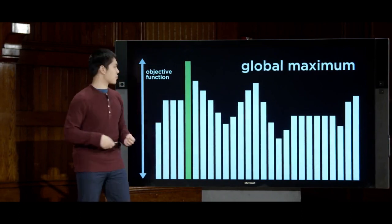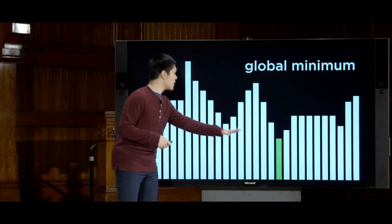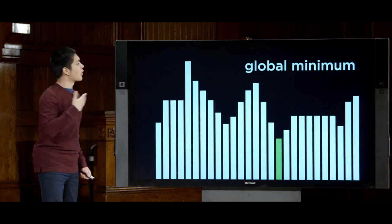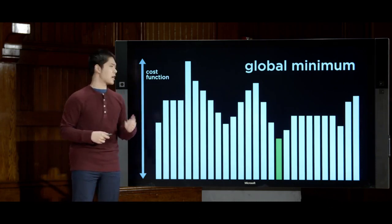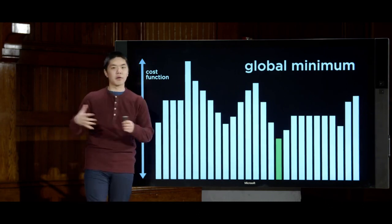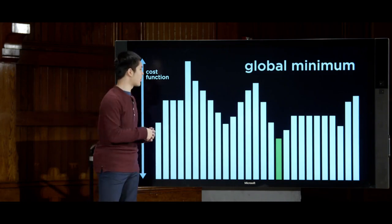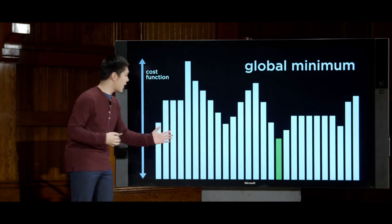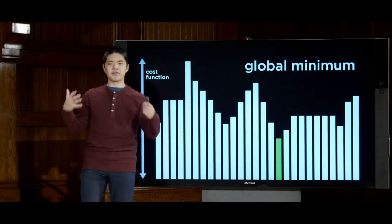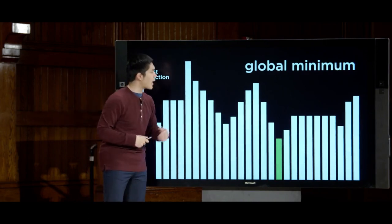An equivalent but reversed problem is finding a global minimum — a state with a value lower than all other possible values. When trying to find a global minimum, we call the function a cost function. Each state has some sort of cost, whether monetary, time-based, or distance-based. We're trying to minimize the cost and find the state with the lowest possible value.